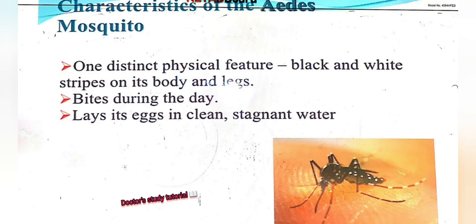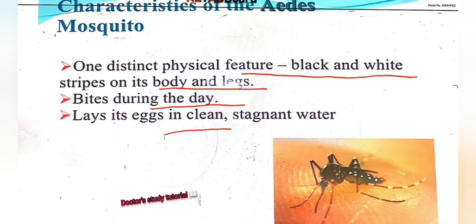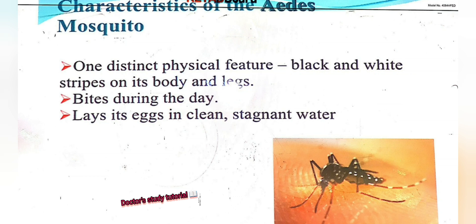The characteristics of the Aedes mosquito: one distinct physical feature is the black and white stripes on its body and legs. It bites during the daytime and lays its eggs in clean stagnant water. Here we can see the picture of the Aedes aegypti mosquito.